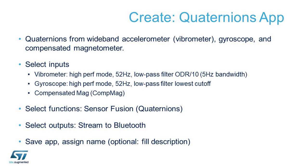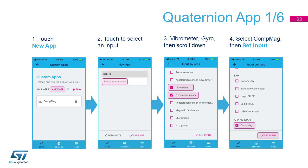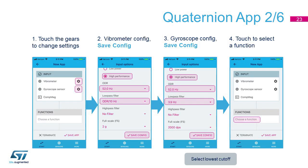For the magnetometer, we will use the CompMag just created. Let's tap on New App, select the accelerometer, gyroscope, and CompMag, which appears in the Input screen as an input. Accelerometer and Gyroscope properties have to be set to High Performance 52 Hz with Low Pass ODR 10, and High Performance 52 Hz with Low Pass 3.9 Hz, respectively.